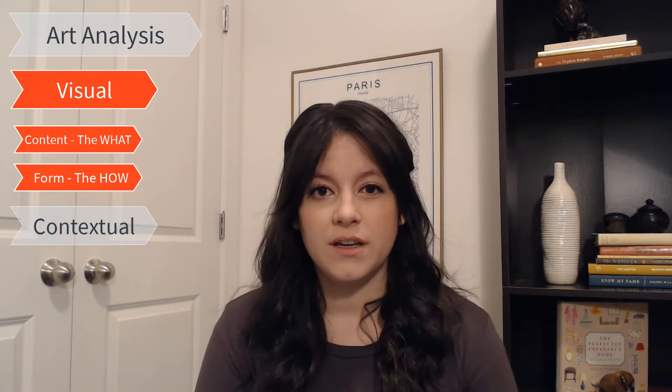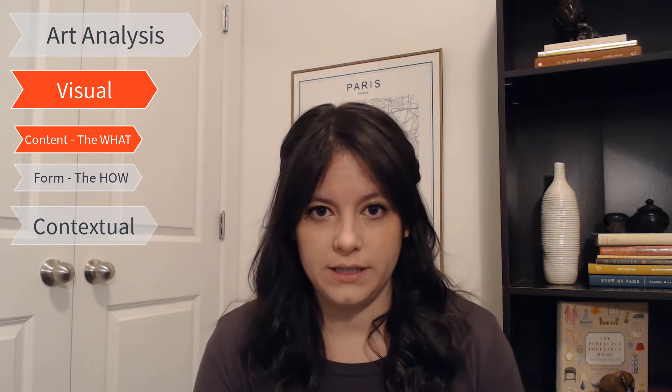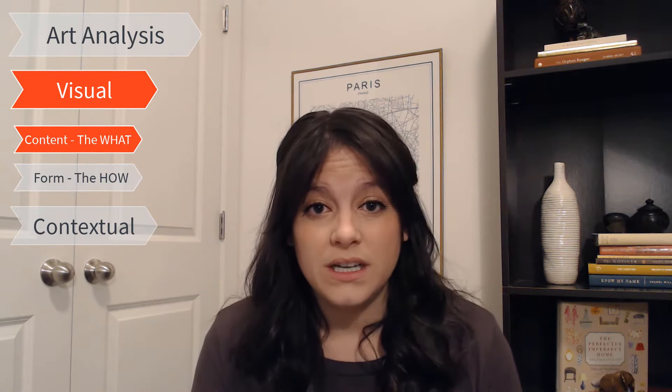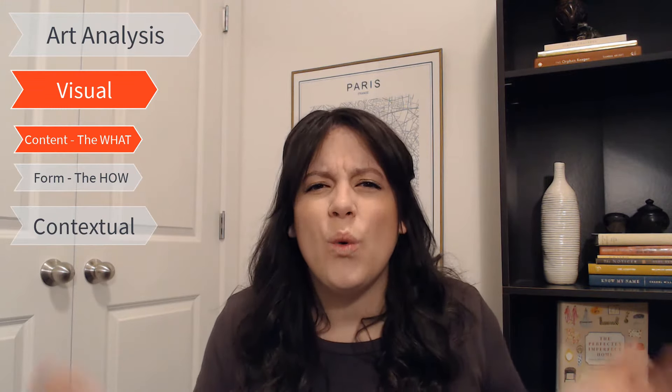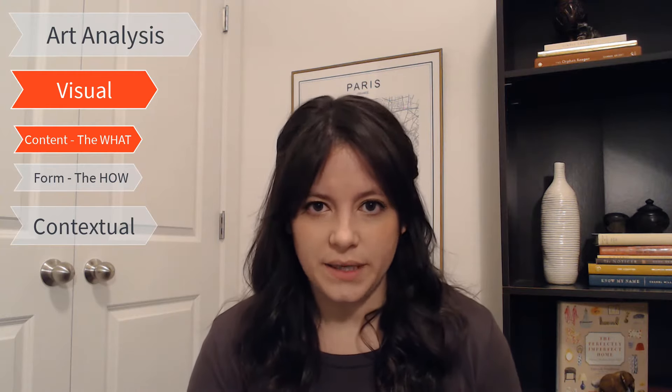Let's start with the easier of the two: visual art analysis. This is everything you can see in the piece. Visual art analysis has two parts — it covers the content and the form of the art piece. Content is the what. What is being included in this piece? Is there a story being told? Is it religious? Symbolic? Abstract? What are you looking at? What do you see? What is happening in this piece?